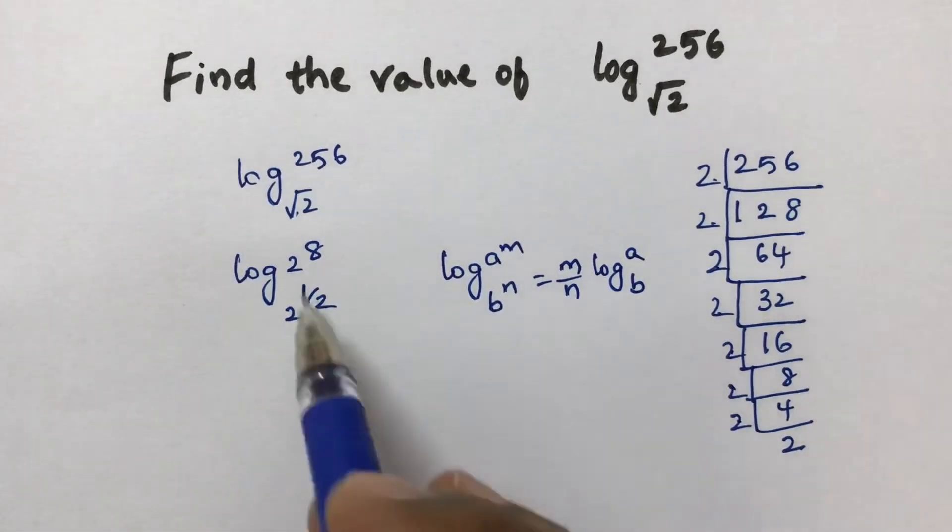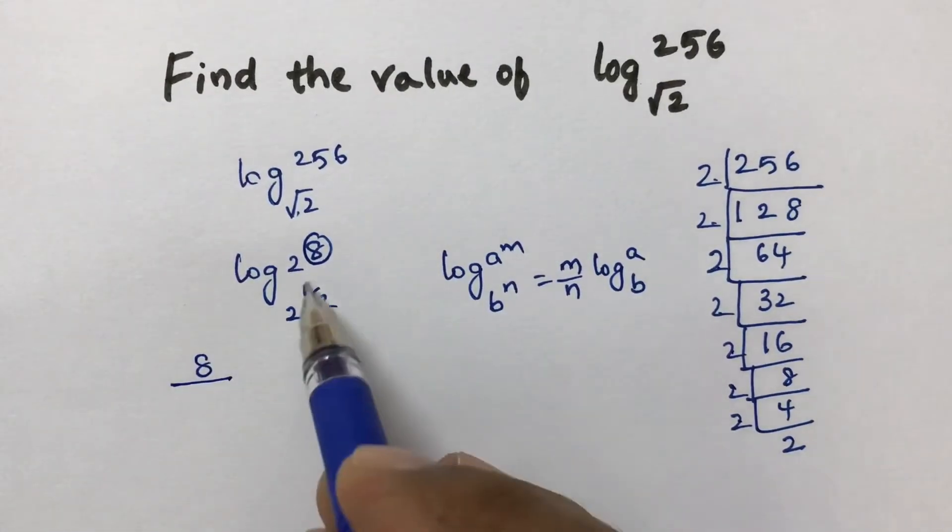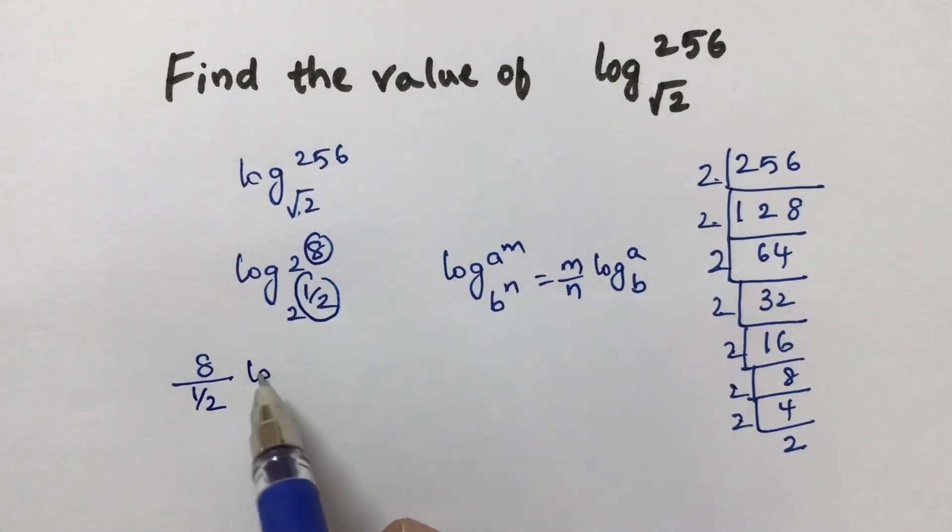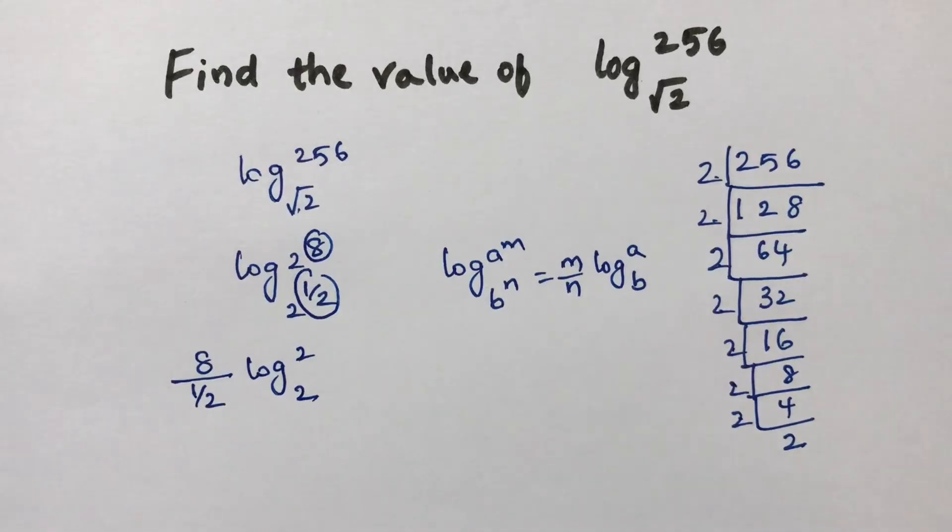If you apply this formula, in place of m we have 8, and in place of n we have 1 by 2. This gives us 8 divided by 1 by 2, times log 2 to the base 2.